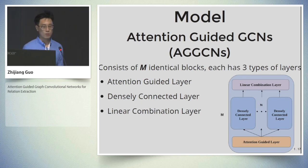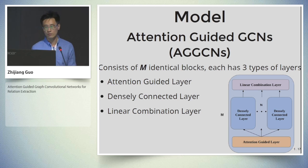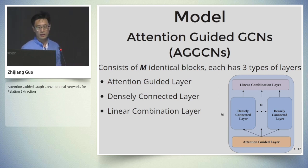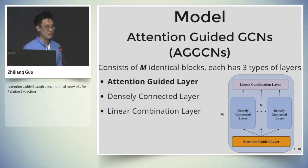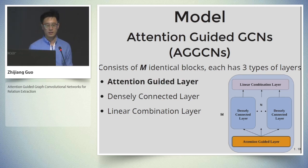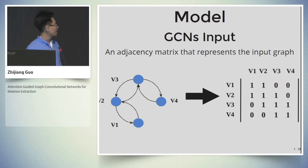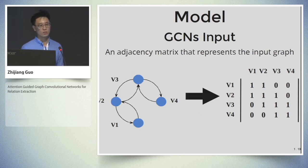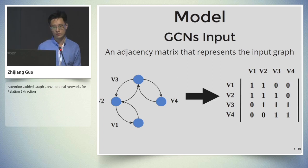The motivation of our work is to find a way to learn the pruning method in an end-to-end fashion rather than using a rule-based one, and without additional computational overhead. Therefore, we propose our model, Attention-Guided Graph Convolutional Networks — AGGCN in short. Our model consists of M identical blocks, and each block has three types of layers: an attention-guided layer, a densely-connected layer, and a linear combination layer.